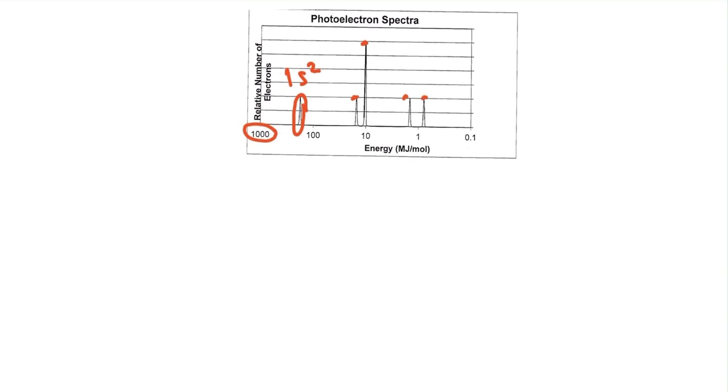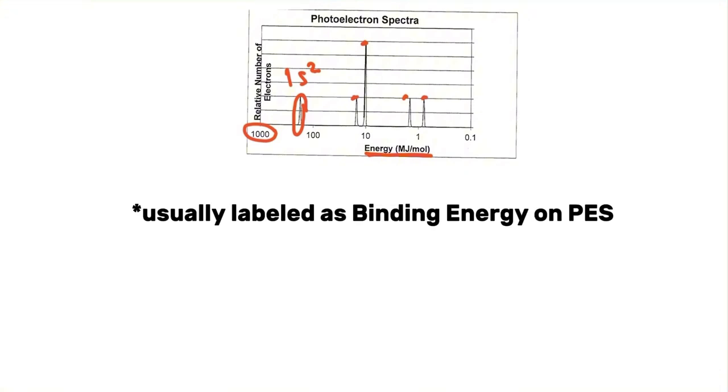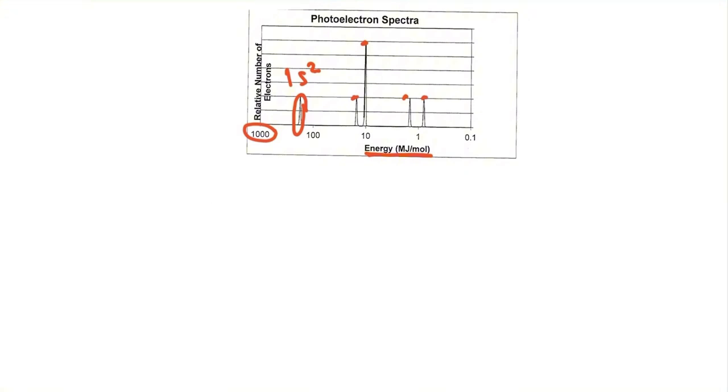The reason that we can say this is because the x-axis is in ionization energy, which is basically the energy required to remove an electron from the atom. The closer these atoms are to the nucleus, the harder they are to remove. So that means that the ones that require the least amount of energy, which is this peak for example, would be the outermost 3p².